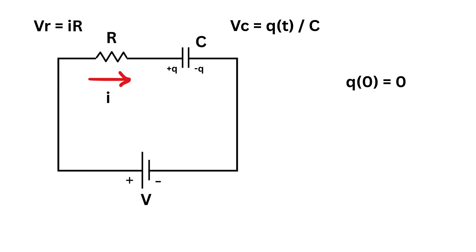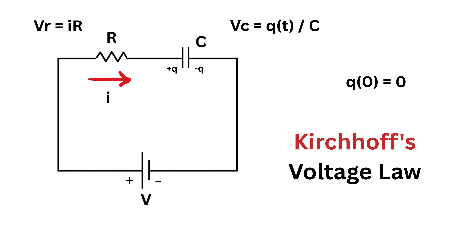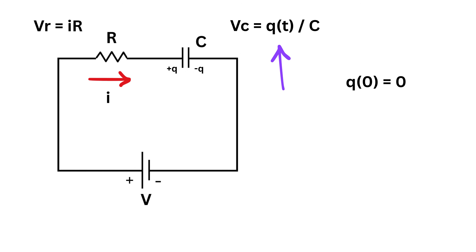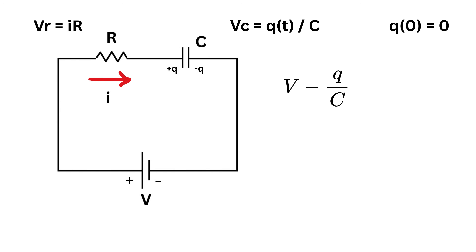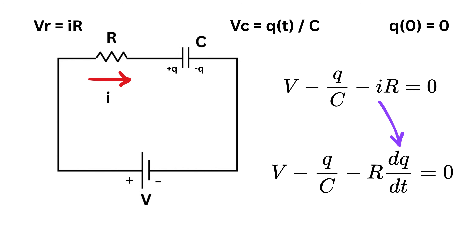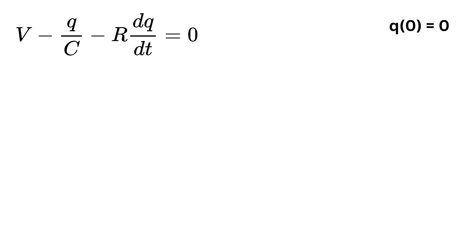Now we write the potential equation of this circuit using Kirchhoff's law. The voltage drop across the capacitor is Q divided by C, and across the resistor is I multiplied by R. So we get V minus Q over C minus IR equals zero. Now here's the key idea: current is nothing but how fast the charge is changing with respect to time. So we replace I with DQ by DT. This turns our loop equation into a differential equation involving just Q and T, which we can now solve using basic integration.